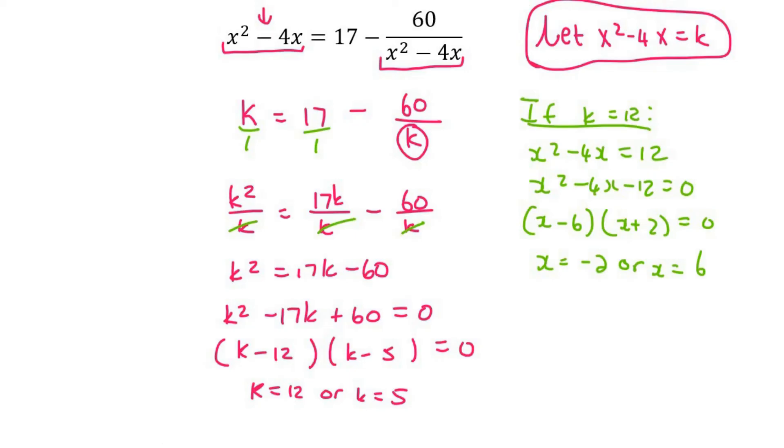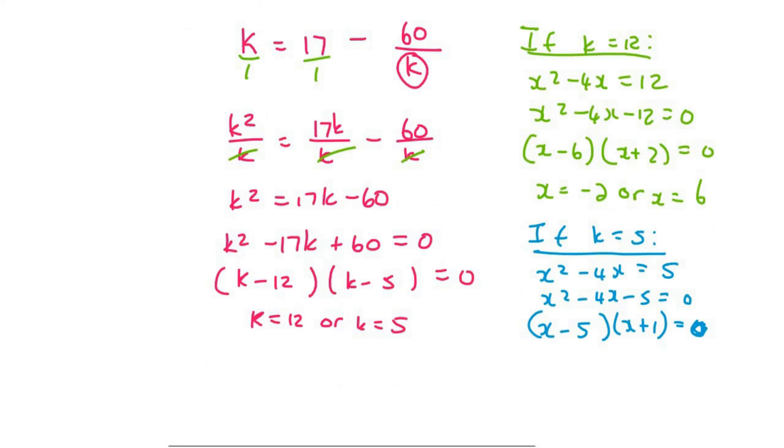Then we can do the other one. So we can say if k equals to 5, then we can say x² minus 4x equals to 5. Bring the 5 over and this one will factorize like that, and so therefore we can say that x is 5 or x equals to negative 1.